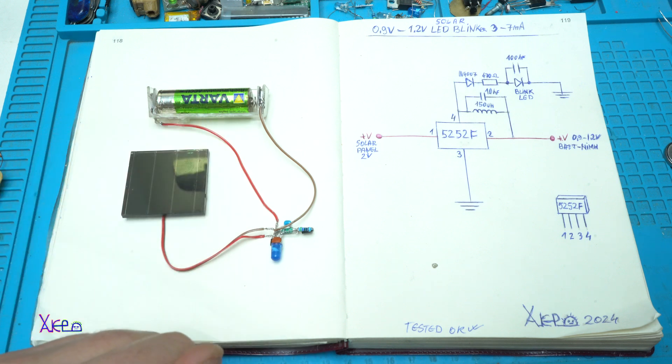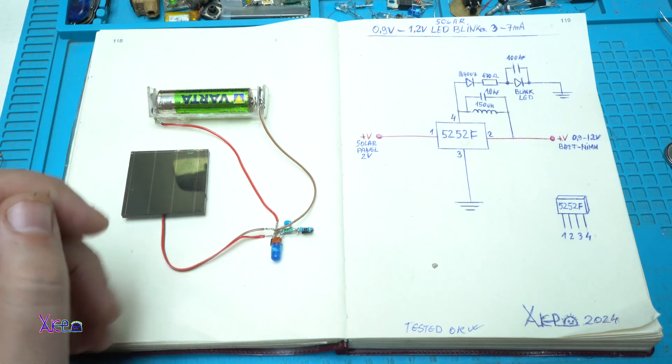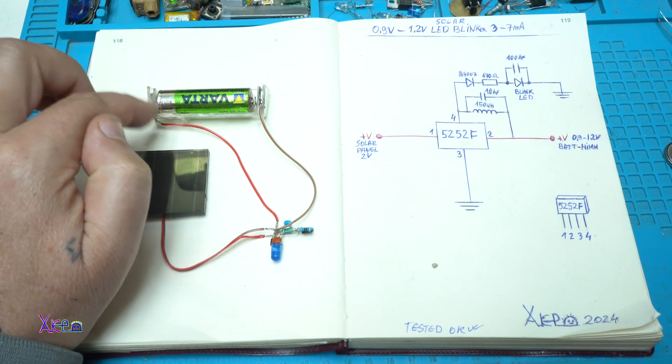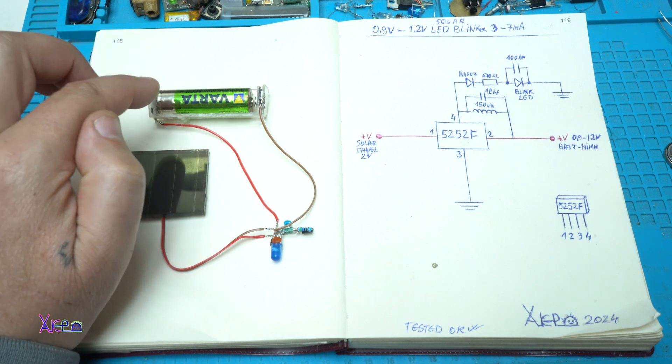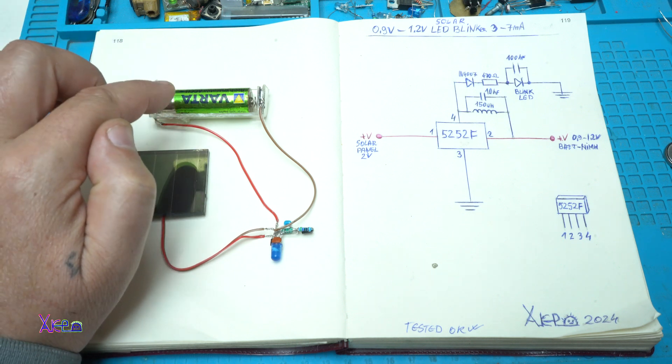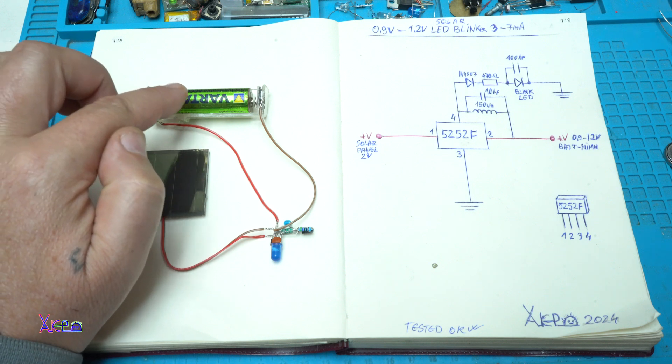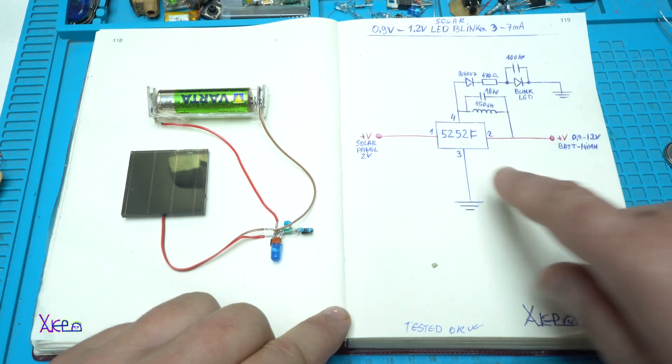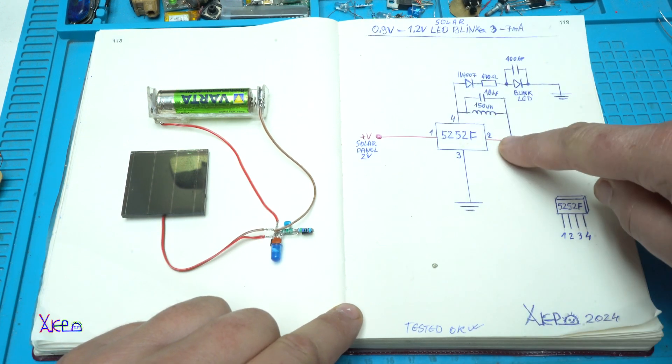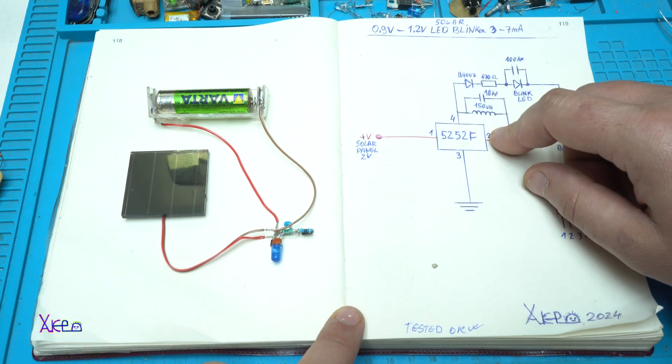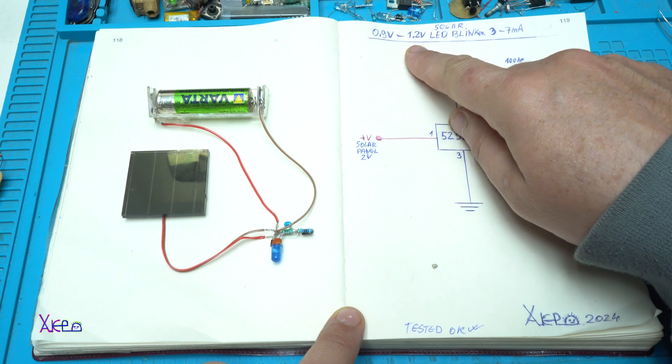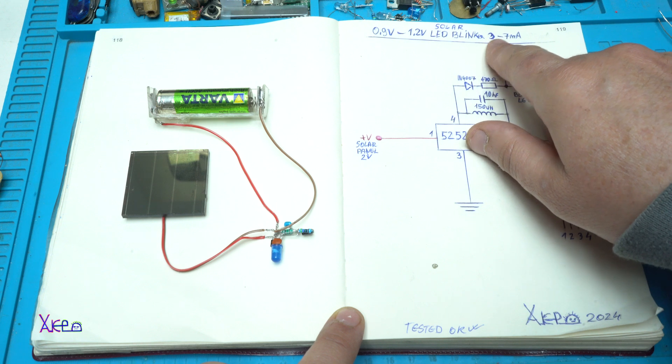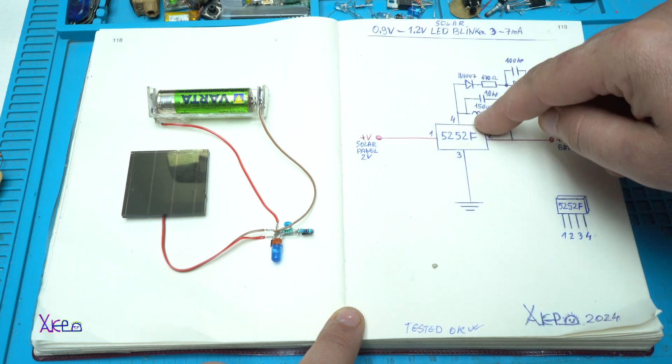My circuit is finished. I have soldered all the components, adding the 1.2 volt rechargeable battery. This battery has 2000 milliamp hours and will last a super long time with the self-blinking LED circuit. The solar panel will give around 20 milliamps to charge the battery. To mention one more time, the circuit works from 0.9 volts up to 1.2 volts maximum and will pull about 3 to 7 milliamps depending on how much the battery is charged.